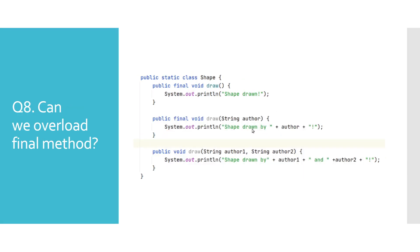Can we overload final methods? The final keyword does not affect method overloading, so we can definitely overload final methods. As shown in the example, we have defined three draw methods with different numbers of parameters, and Java does not report a compile time error, so this is clearly a valid case.